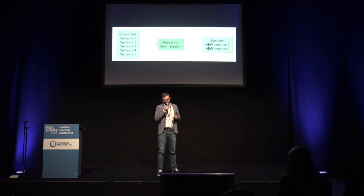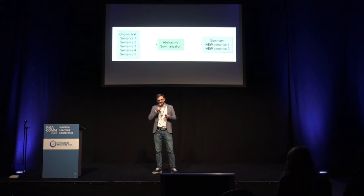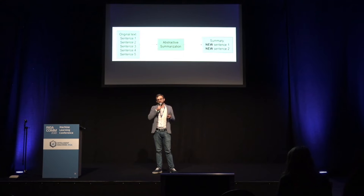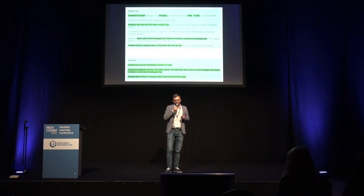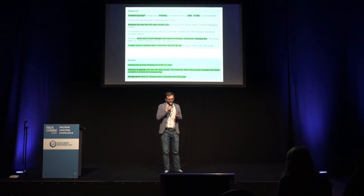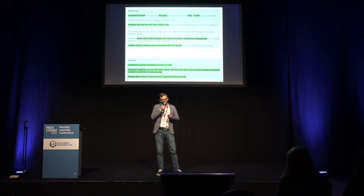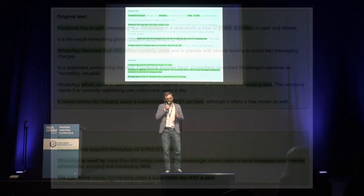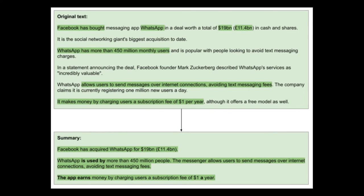Abstractive summarization is a type where we extract the most relevant information and rewrite it. Here is an example of an abstractive summary: we have an original text and then we have a summary. In abstractive summarization we can slightly change sentences and words.